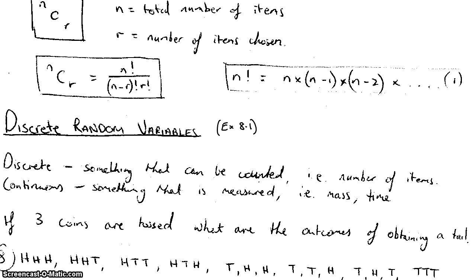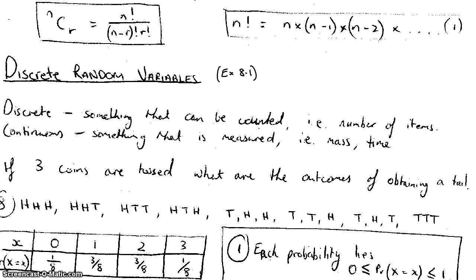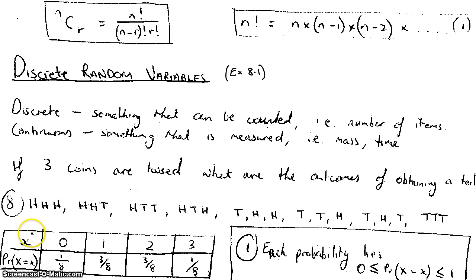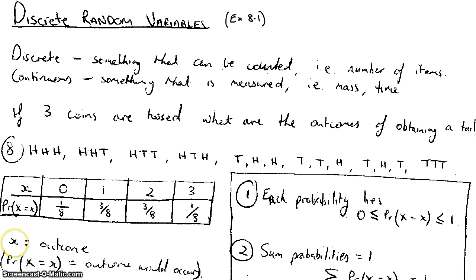What I want to do is put them in this table just down here. So I've got this table here where x is the outcome - zero tails, one tail, two tails, or three tails. I can't get any more than three and I can't get any less than zero. And this thing here, our probability that x equals x, signifies what's the probability of this particular outcome happening.